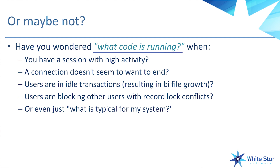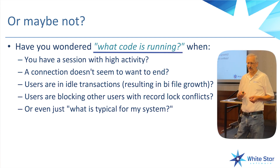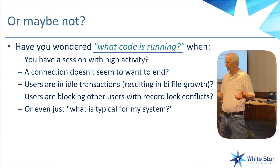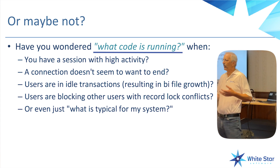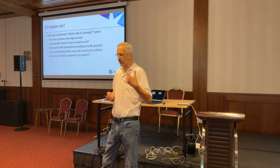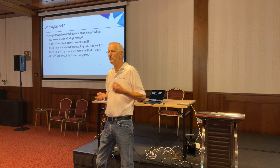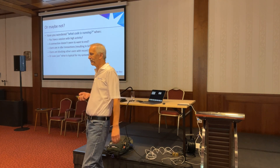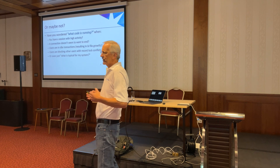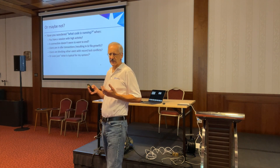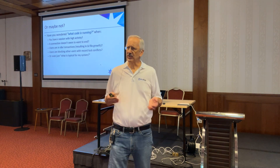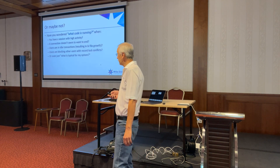Maybe you've seen the infamous 'user XYZ has RECID 123 locked and you can't proceed.' You need to know where that RECID lock is coming from. It doesn't really help to try to call the user because they're not going to answer their phone and they don't know what code they're running anyway. Or even just knowing what the typical utilization is with your system — what programs are usually running, what's normal to see within your system.